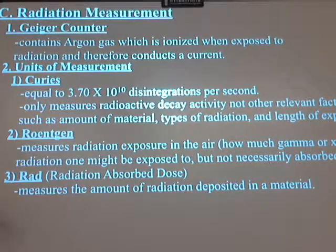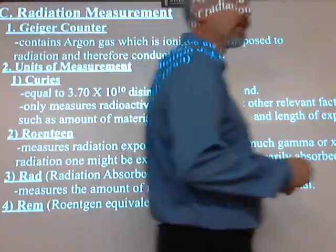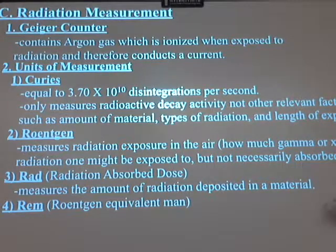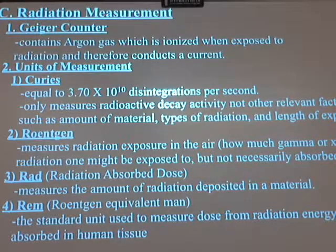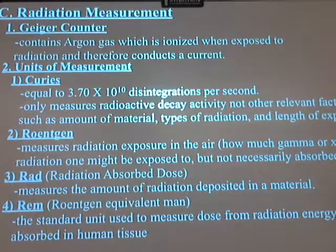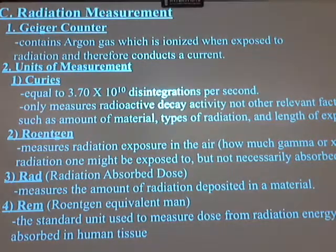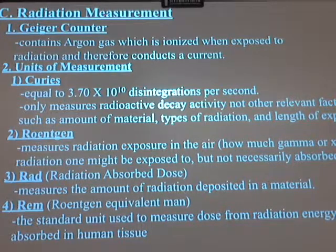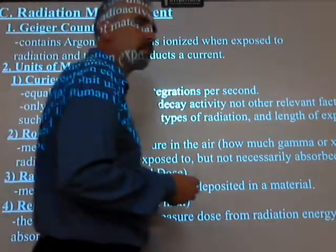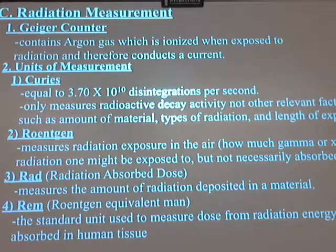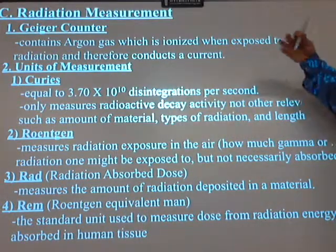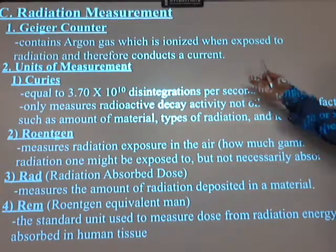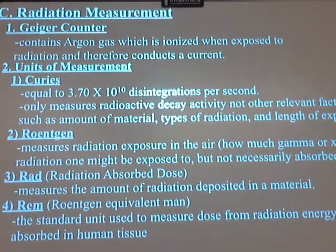Probably the most used and most useful unit would be the REM — Roentgen-Equivalent Man. That means the standard unit used to measure the dose from radiation observed by human tissue. There are guidelines for how many milli-REMs you can absorb during the course of your tenure at a power plant. So that's our real standard — Curies is a basic unit, but the more useful one would probably be REMs.